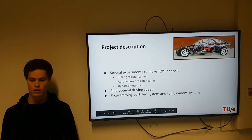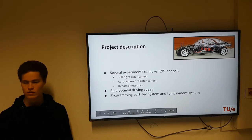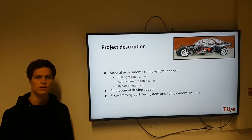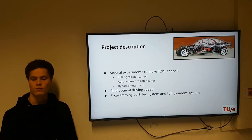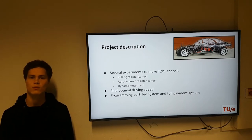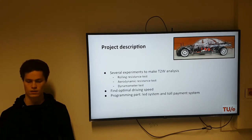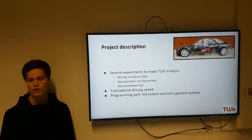These experiments are the rolling resistance test, which is a coast-down test, the aerodynamic resistance test done in a wind tunnel, and the dynamometer test. With these experiments and the tank-to-wheel analysis, we were able to find the optimal driving speed. We've also done a programming part, which consists of a LED system and a toll payment system.